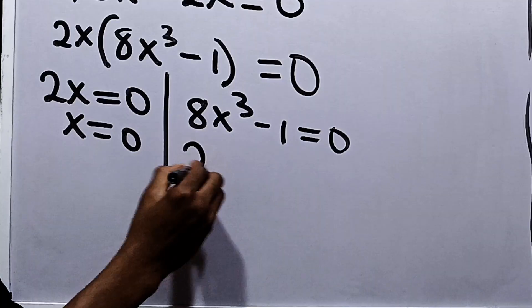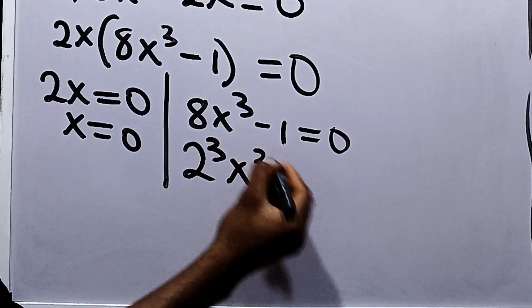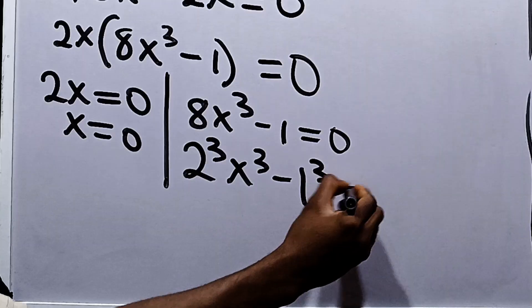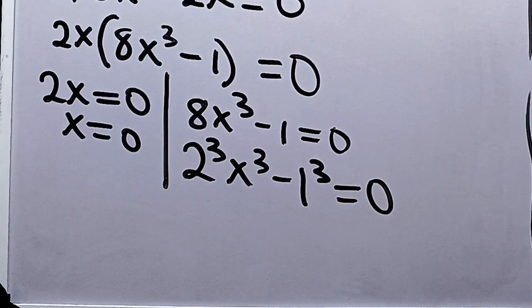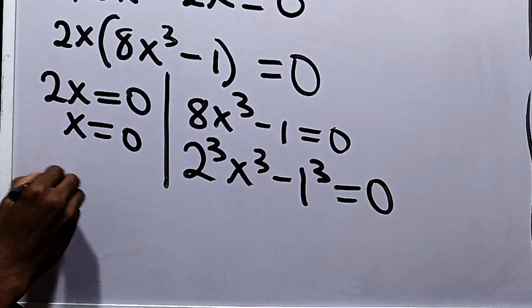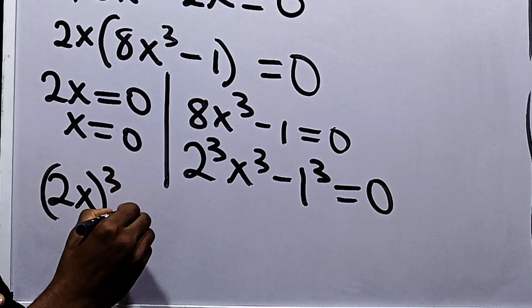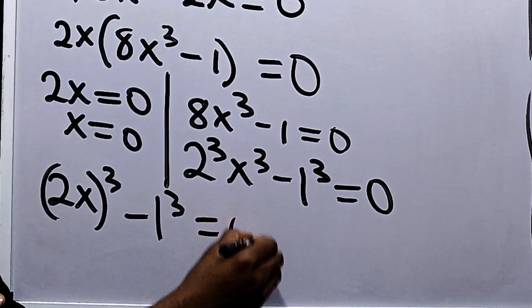Now, we can re-express it as 2 cubed x cubed minus 1 cubed is equal to 0. Now we can say that this becomes 2x to the power of 3 minus 1 to the power of 3 to be equal to 0.